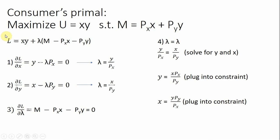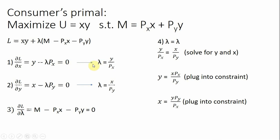Here's a standard consumer's primal problem. We're going to maximize utility — utility equals X times Y — subject to a budget constraint. I'm going to solve this with a Lagrangian. The objective function is X times Y, plus lambda times the constraint. We take three partial derivatives of the Lagrangian: one with respect to good X, one with respect to good Y, and one with respect to lambda, and set all of them equal to zero.